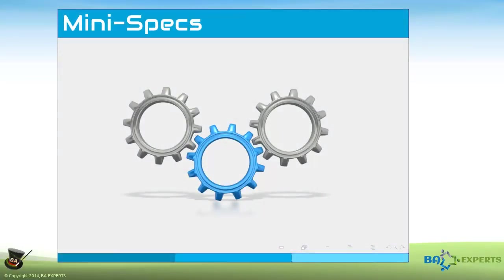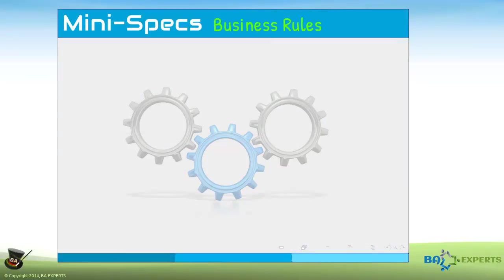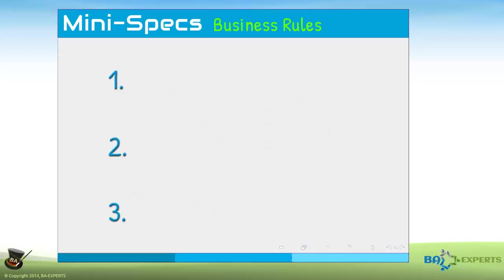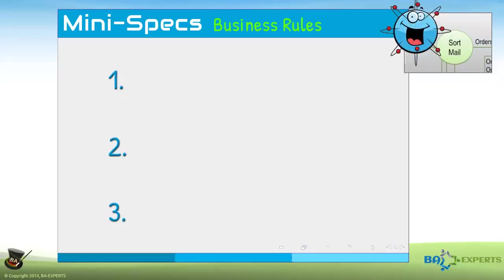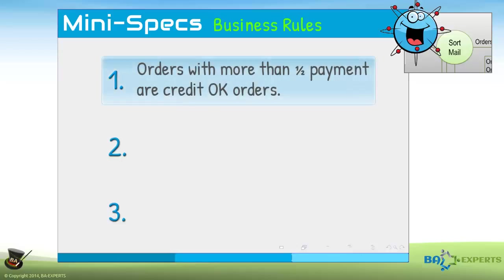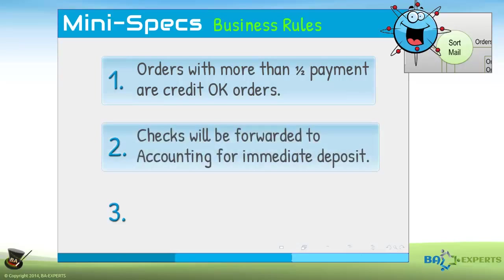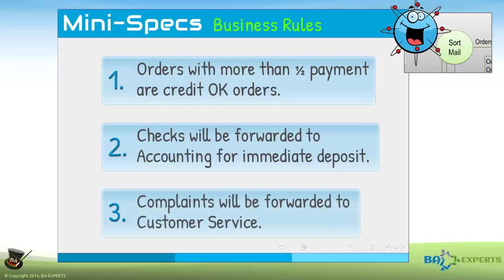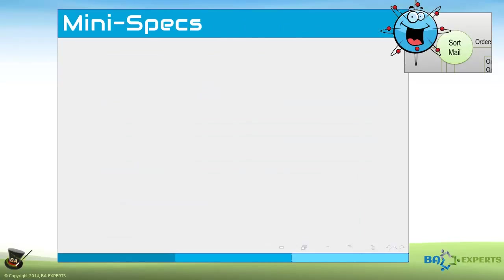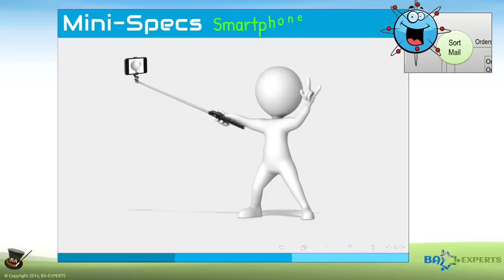Often, processes are controlled by business rules. You might simply list the relevant business rules as process specifications. Sort mail rules: 1. Orders with more than half payment are credit OK orders. 2. Checks will be forwarded to accounting for immediate deposit. 3. Complaints will be forwarded to customer service. Given the state of technology today, you can use your smartphone to make a video showing the people performing the process.